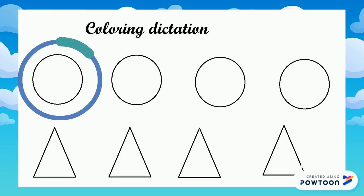Can you show me the color red? Color circle number 1 red. Circle number 1 is red.